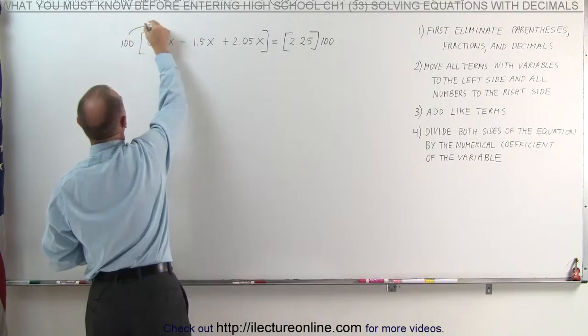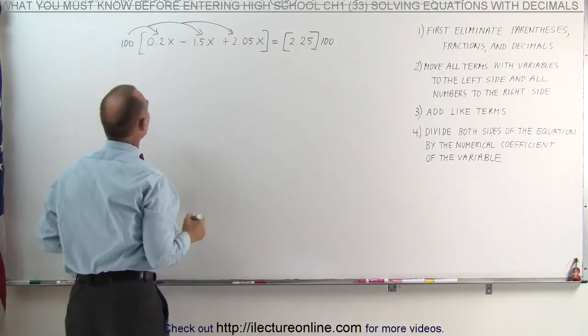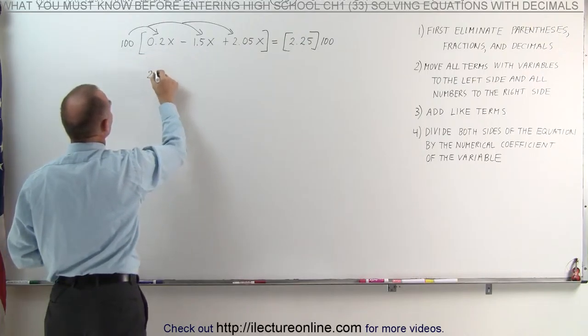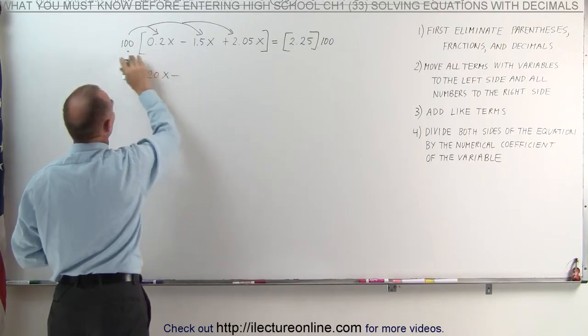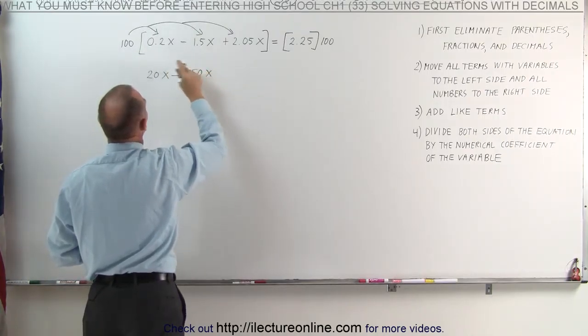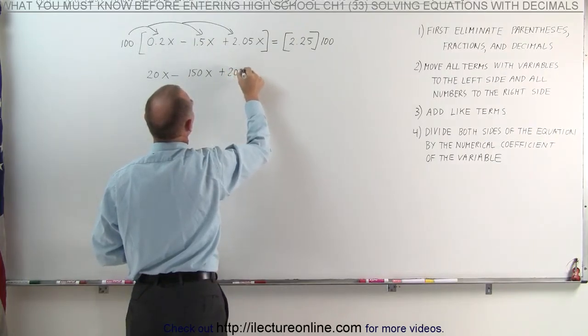Again, we distribute the 100 on each of the terms inside the brackets, which means 100 times 0.2 is 20, this becomes 20x, minus 100 times 1.5 is 150x, and 100 times 2.05 is plus 205x.